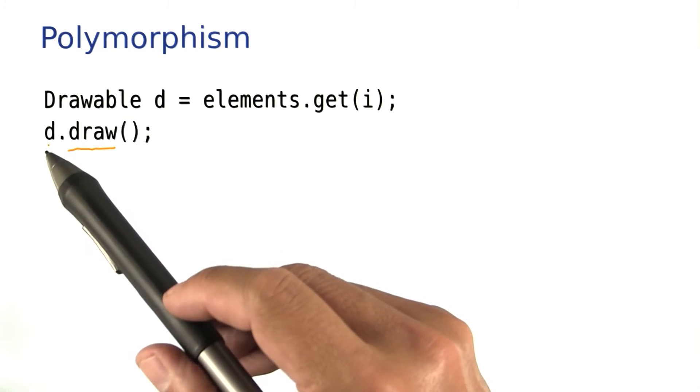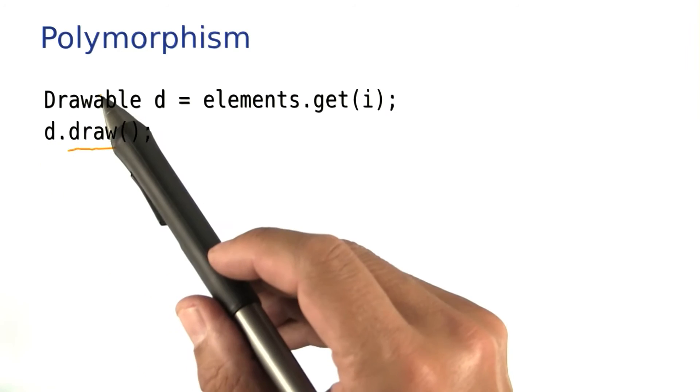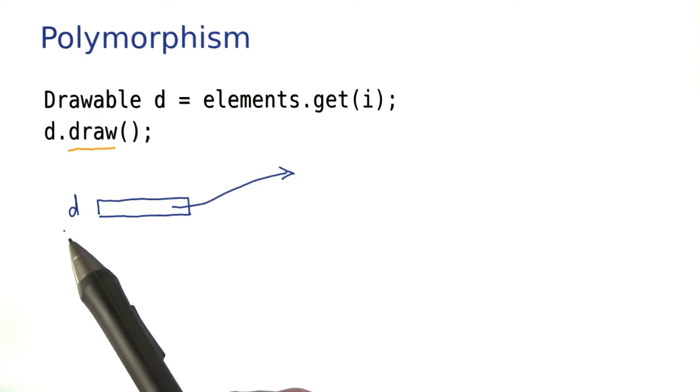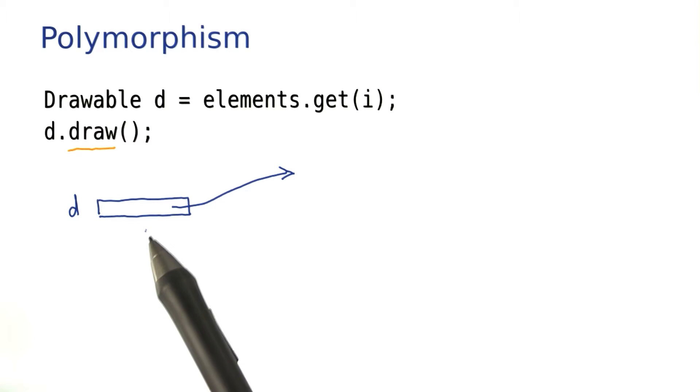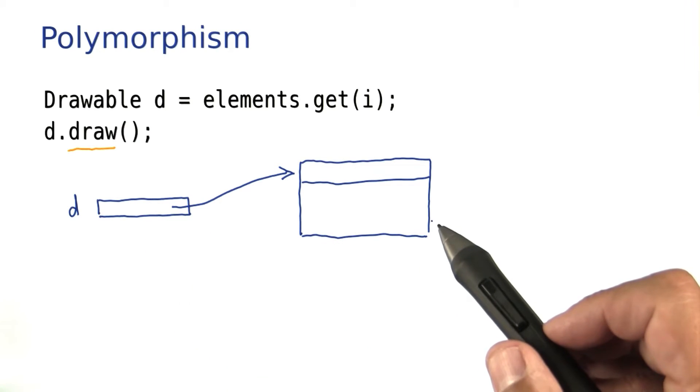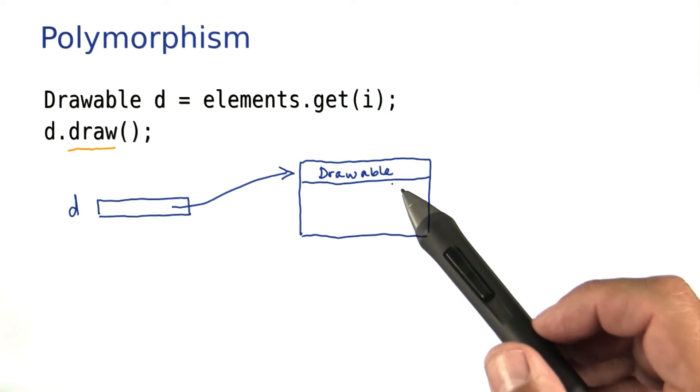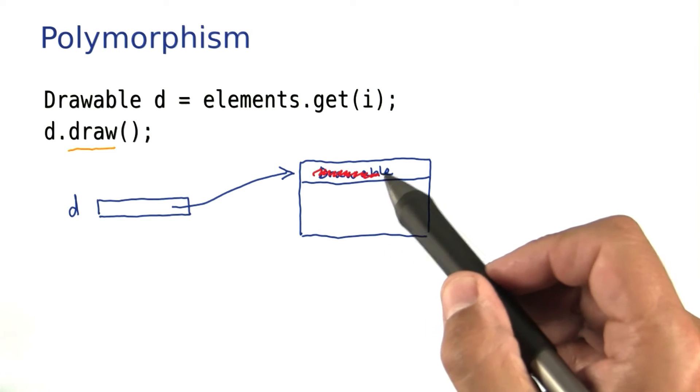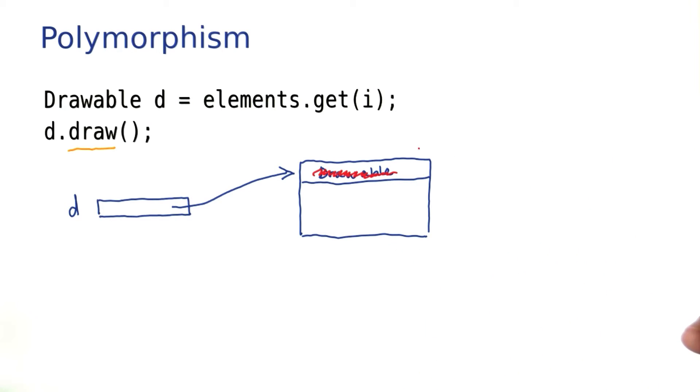That has to work. D belongs to the drawable type, and drawable has a draw method. What's D? It's a variable, so it holds a reference to an object. An object of what class? You might think it's an object of class drawable. But wait a minute, there is no class drawable. Drawable is an interface, so that can't be it.